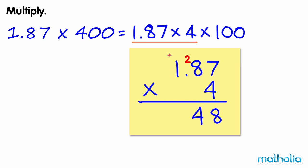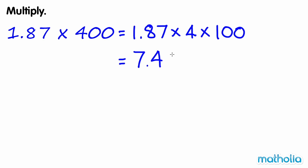1.87 times 4 equals 7.48. Now we need to multiply by 100. We can do this by shifting the decimal point two places to the right. So 1.87 times 400 equals 748.